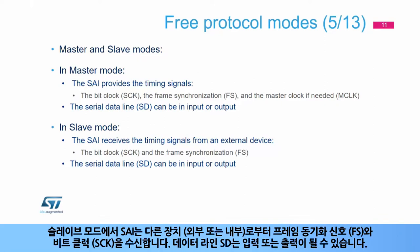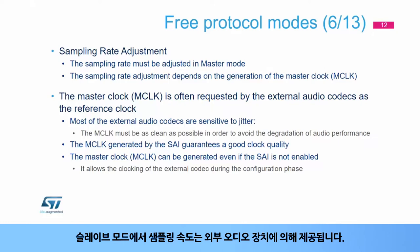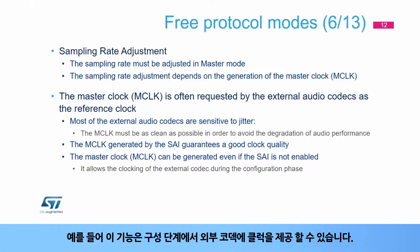In slave mode, the SAI receives the frame synchronization signal (FS) and the bit clock (SCK) from another device, external or internal. The data line (SD) can be either input or output. In master mode, it is up to the SAI to generate the appropriate timings to provide the correct sampling rate. In slave mode, the sampling rate is provided by the external audio device. Note that it is possible to generate a master clock to an external device even when the SAI is not enabled. This feature can, for example, provide a clock to an external codec during the configuration phase.